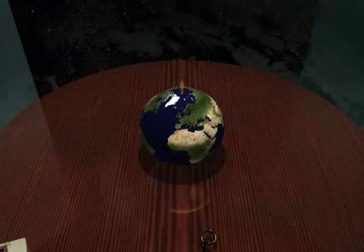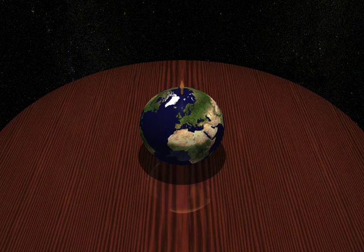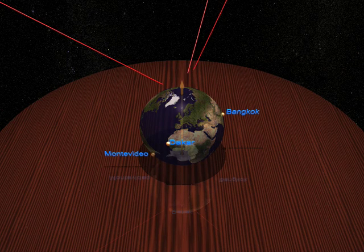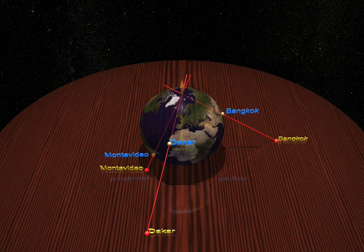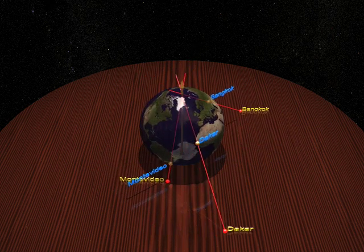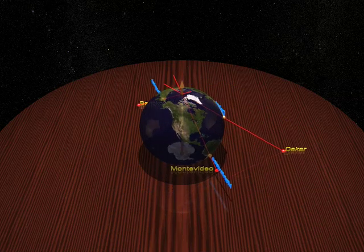One method is to project it on a plane. Let's choose a city, Dakar for example. We draw a straight line from the North Pole through Dakar. The line hits the table at some point, that we call its projection onto the table.